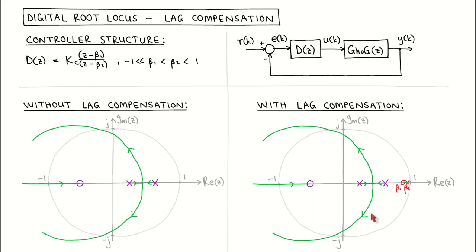Note that lag compensation can be added to complex controller structures, not only to proportional controllers. A common controller design approach is to use lead compensation to achieve the desired transient response and then add lag compensation to achieve the desired steady state response.